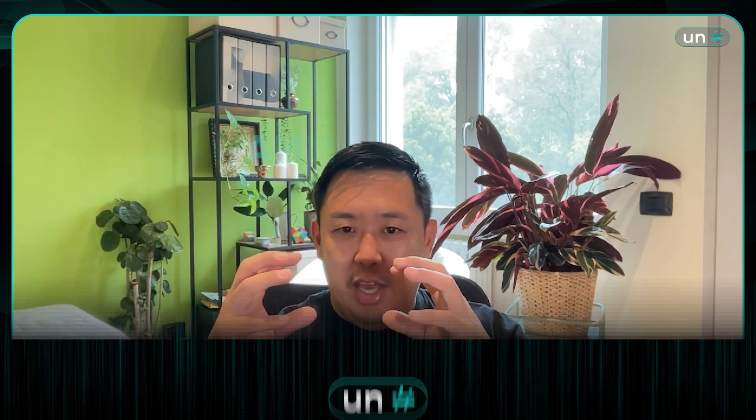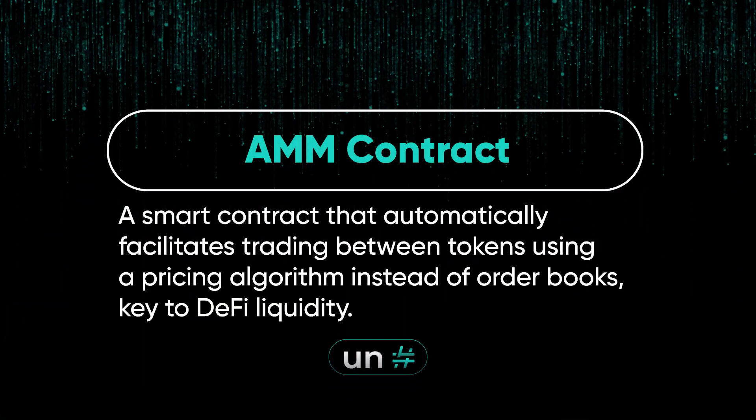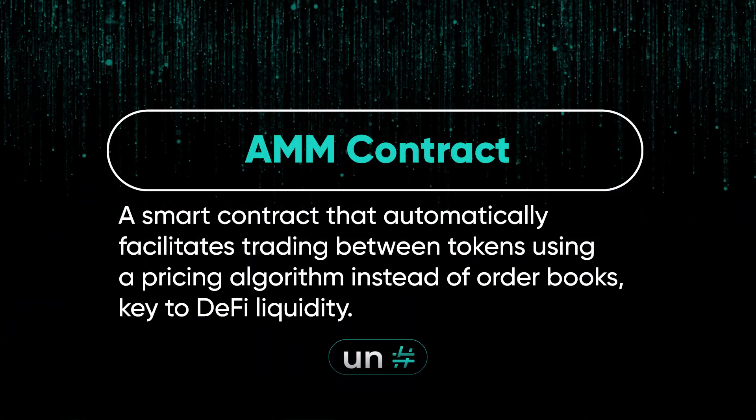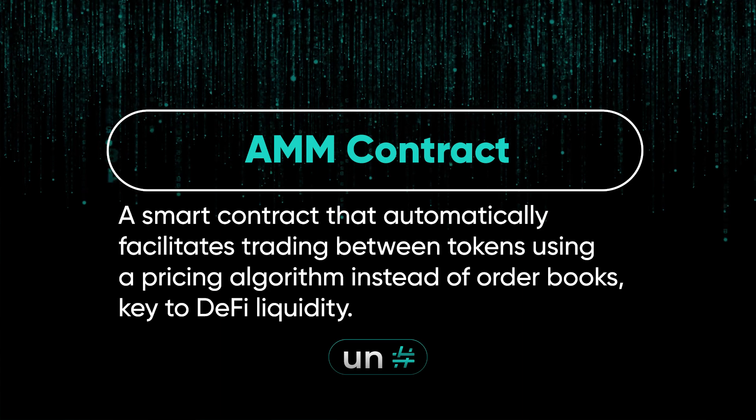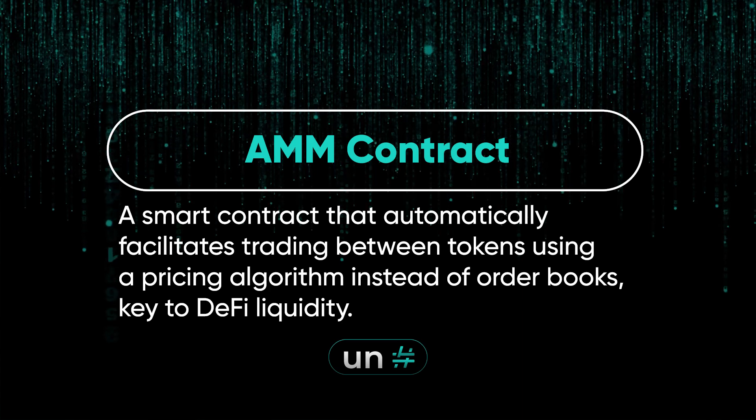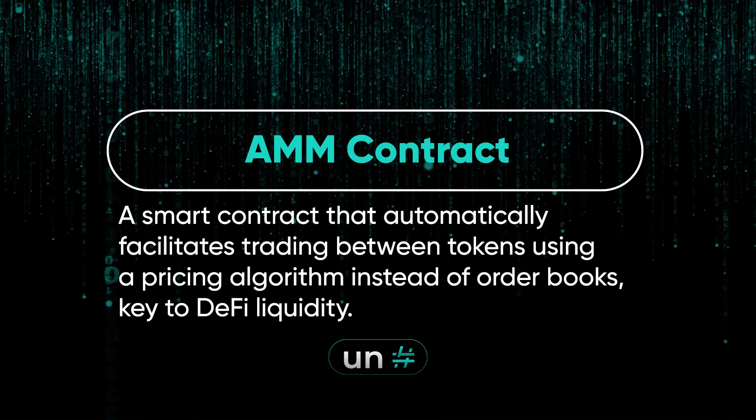We wanted to upgrade this asset management component — move from Aave V2 and Compound V2 to the V3s. Say we want to add Morpho, Euler, Fluid, and all these different markets — how can we do it seamlessly? How can we keep the integrity of the vault contract or the AMM contract, but change the routes and make it modular and automatable? We also wanted to create a one-click structured product suite.